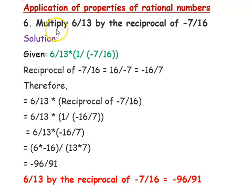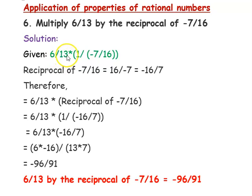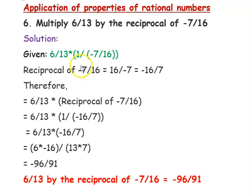The first question is: multiply 6/13 by the reciprocal of -7/16. We will write the given question in our understanding terms — that is 6/13 multiplied by 1 divided by (-7/16). The reciprocal of -7/16 is 1 divided by (-7/16), which is nothing but 16 divided by -7.